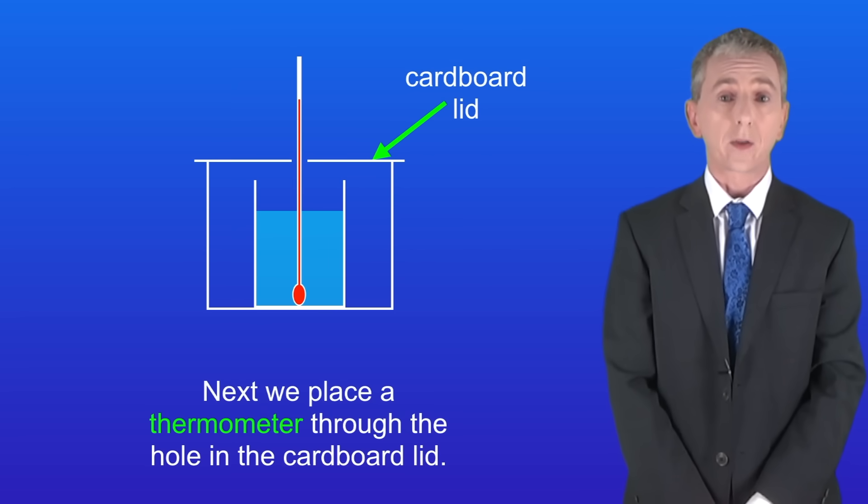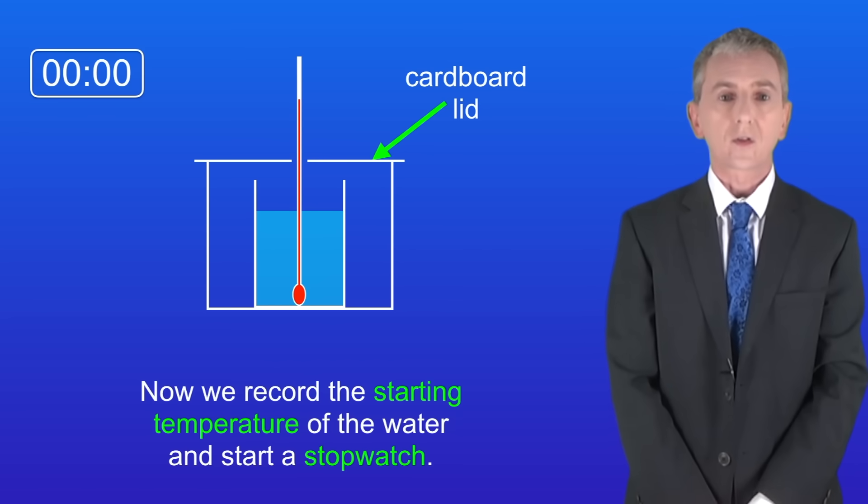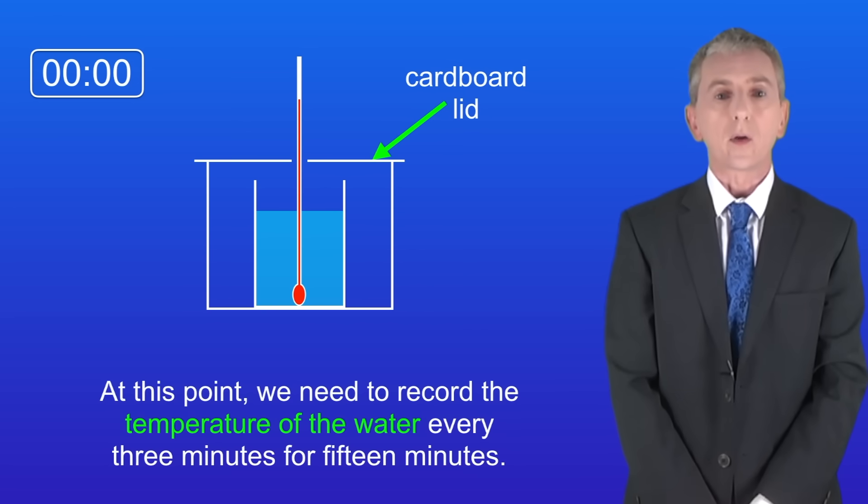Next we place a thermometer through the hole in the cardboard lid and the bulb of the thermometer must be in the hot water. Now we record the starting temperature of the water and start a stopwatch. At this point we need to record the temperature of the water every three minutes for 15 minutes.